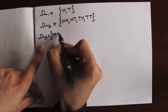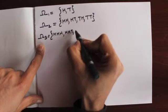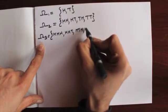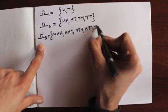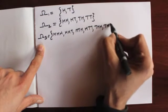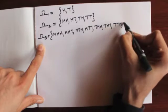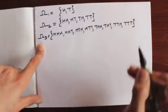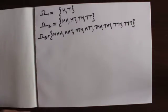When tossing the coin three times, the possible outcomes are: HHH, HHT, HTH, HTT, THH, THT, TTH, and TTT.